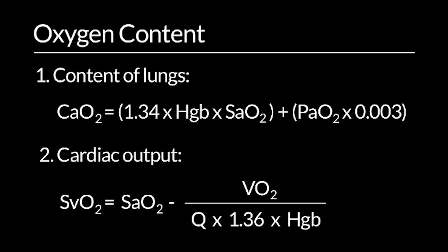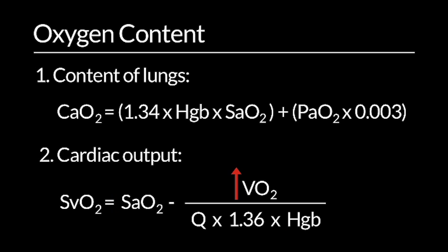As cardiac output falls, given a certain amount of O2 consumption, mixed venous saturation will fall. Similarly, if arterial saturations or hemoglobin is less, there will also be less oxygen left over for the systemic venous circuit. Just as importantly, if O2 consumption goes up — as in a patient who is febrile or very active — mixed venous content will tend to go down.